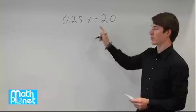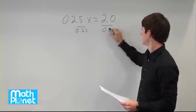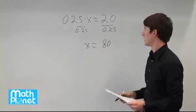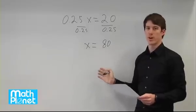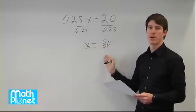From here we can divide both sides by 0.25 to find that x is equal to 80. Now that we have the total, we can find the number of horses by multiplying this number by the percentage of horses.